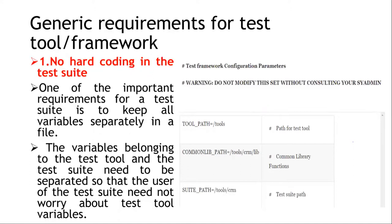This configuration file should be kept separately. Variables belonging to a test suite and the test suite itself need to be separated, so that users of the test suite do not need to worry about the test suite variables. The diagram shown to the right side lists test framework configuration parameters, including the path for the test tool, common library functions, and the test suite path. We should not modify path variables unless consulting our system administrator.